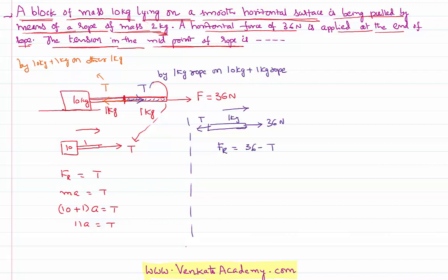So F resultant is 36 minus tension. 36 is taken as positive because it is in the direction of motion. So F resultant is M·A: 36 minus tension. The mass of the rope is only 1 kilogram, so 1 times A equals 36 minus tension.